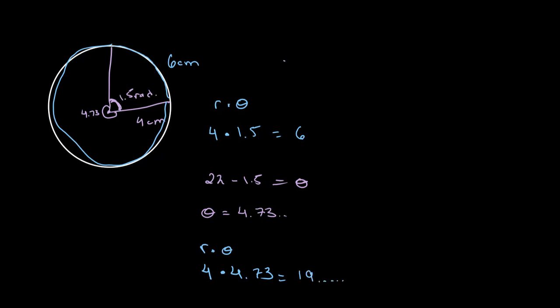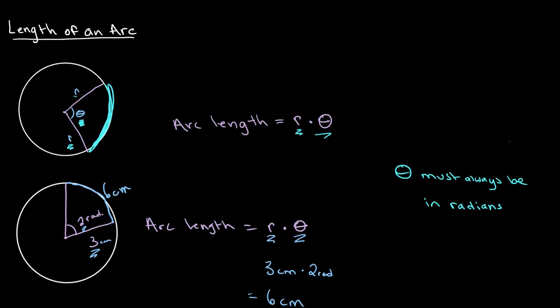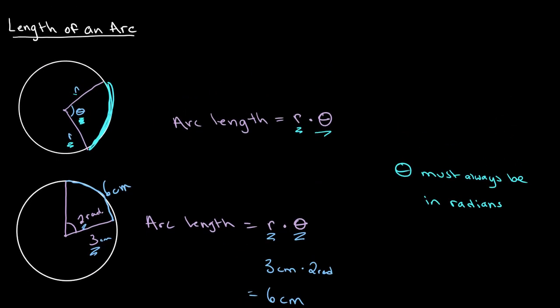It's pretty simple to remember: the length of an arc is given by r, the radius, multiplied by theta when theta is given in radians.